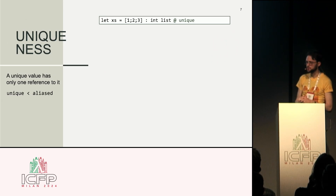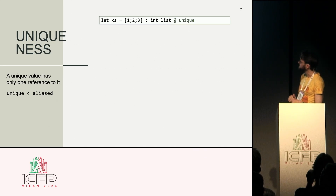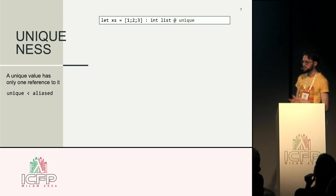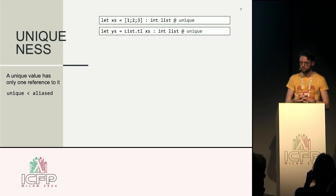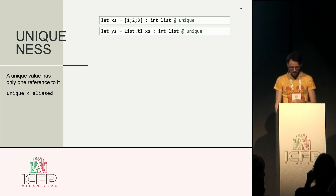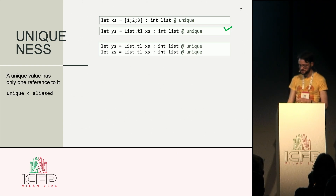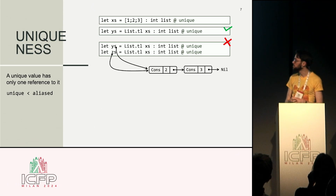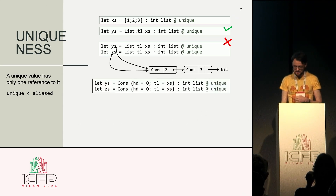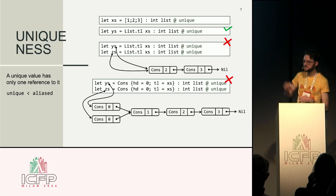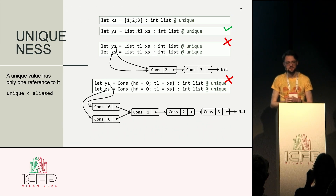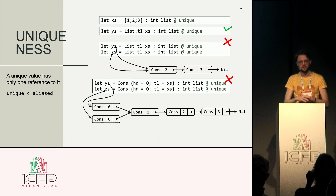We say a unique value has only one reference to it. So if I have a list xs = [1, 2, 3] that I've just created, it will be unique — I have the only reference and I can mark this using this mode. I can project out of a unique data structure and get a unique thing back, but if I do this twice, that's not allowed because I've created two pointers to the same sub-structure. Similarly, I could not create two cons cells with the same tail, because then uniqueness is not maintained. Uniqueness should really be a deep property applying to all elements of the data structure.